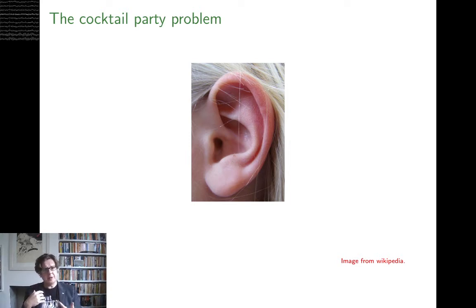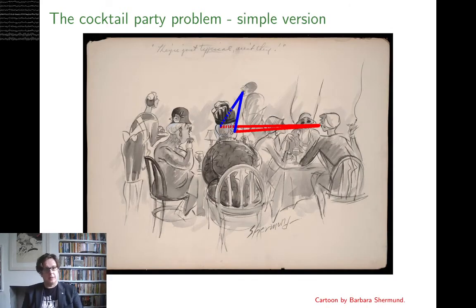So the cocktail party problem, the formulation I've given, which is where there's two sources and there's an equal number of recordings, that's the sort of simple version. And indeed, in the version that we're going to deal with in the next lecture, we're also assuming linear mixing.